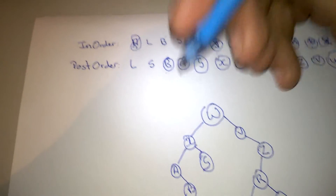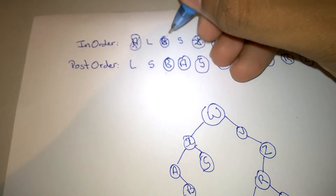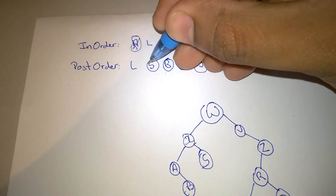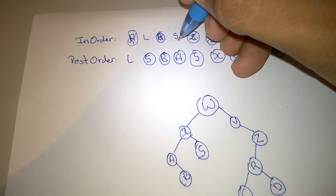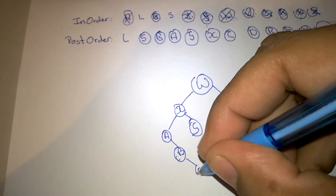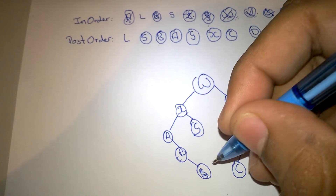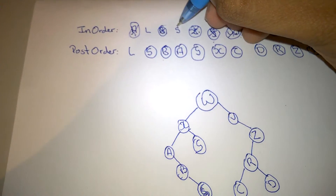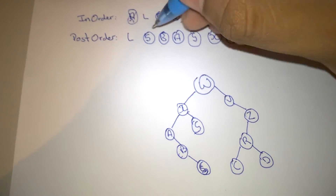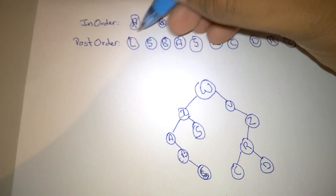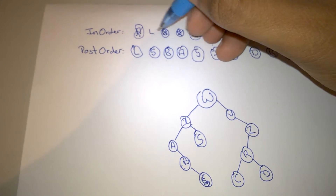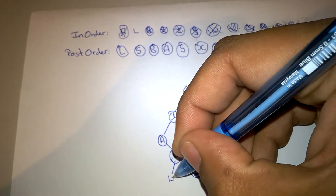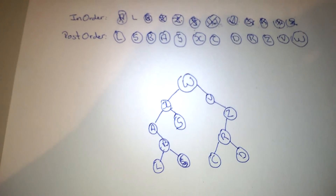So we take B here, and we see that B has two elements, one to the left and one to the right. We take the next value, S, and we see S is to the right of B. So we remove S. S has none to the left and none to the right. Then we go on to the next element, L. We see that L is to the left of B. So we put L, and that's it.